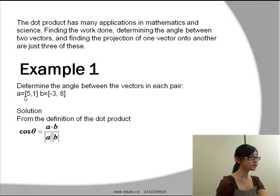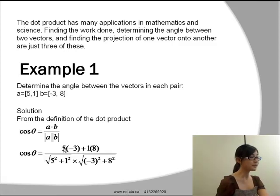To find the dot product, it's very easy. All you have to do is multiply the first two terms of each vector, that would be 5 and negative 3 in this case, and add that to the multiplication of the second terms, so that would be 1 times 8. So 5 times negative 3 plus 1 times 8.